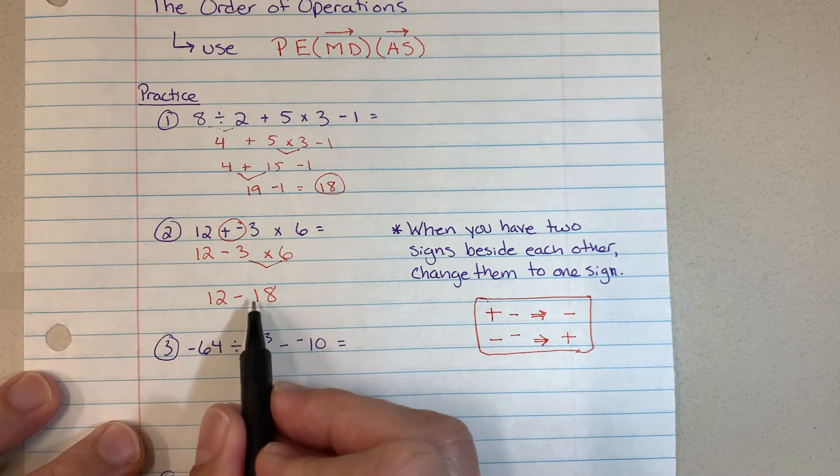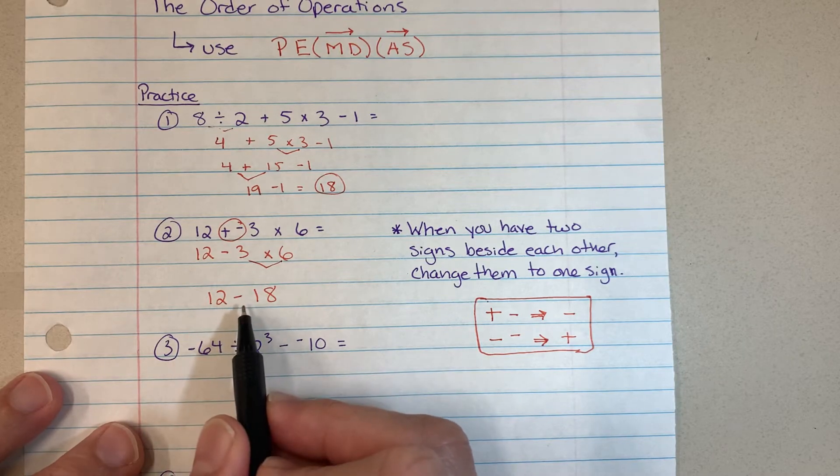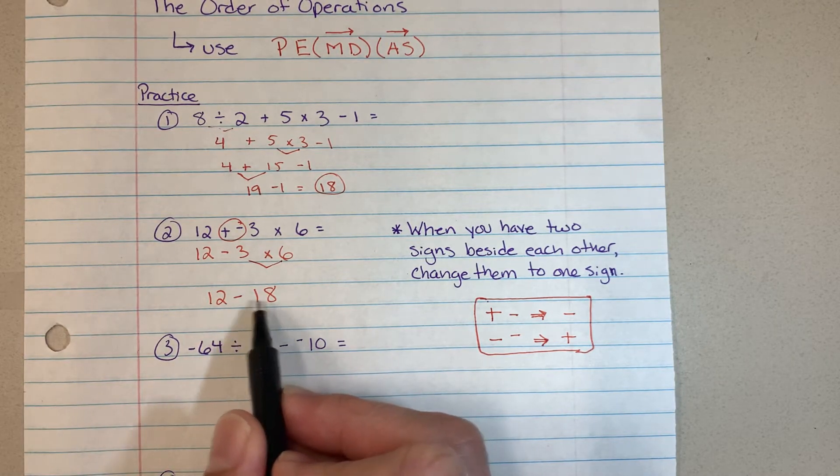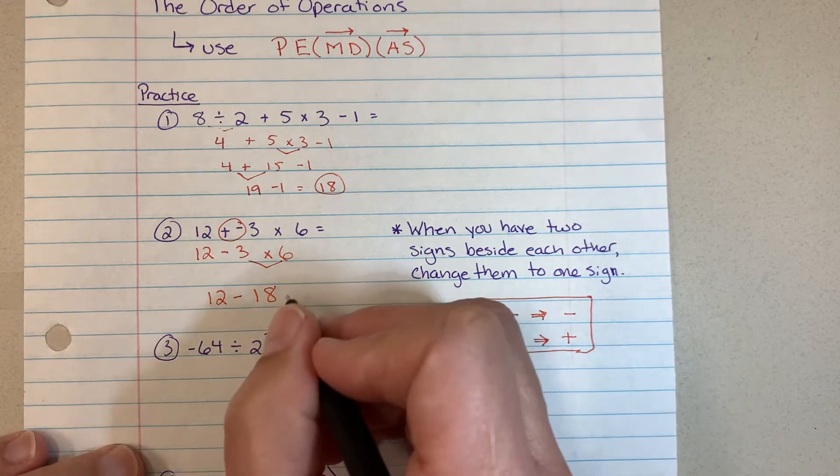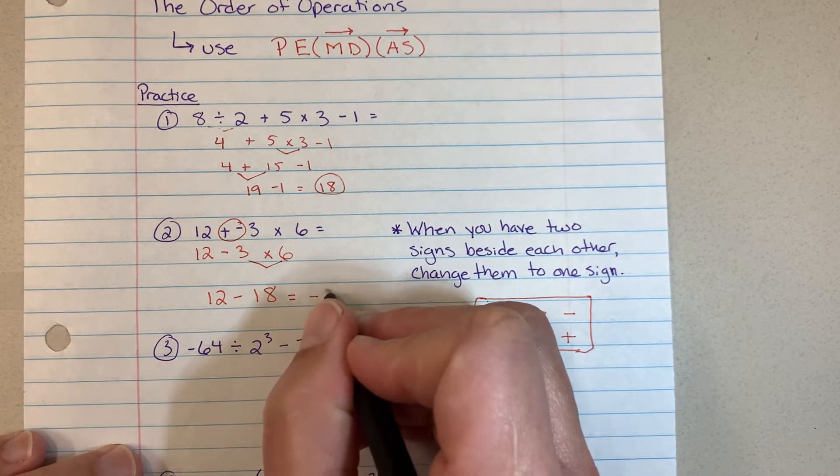Then the only thing left to do is 12 minus 18, and you're going to get a negative answer here because you're taking more away than you actually have. 12 minus 18 is going to be negative 6.